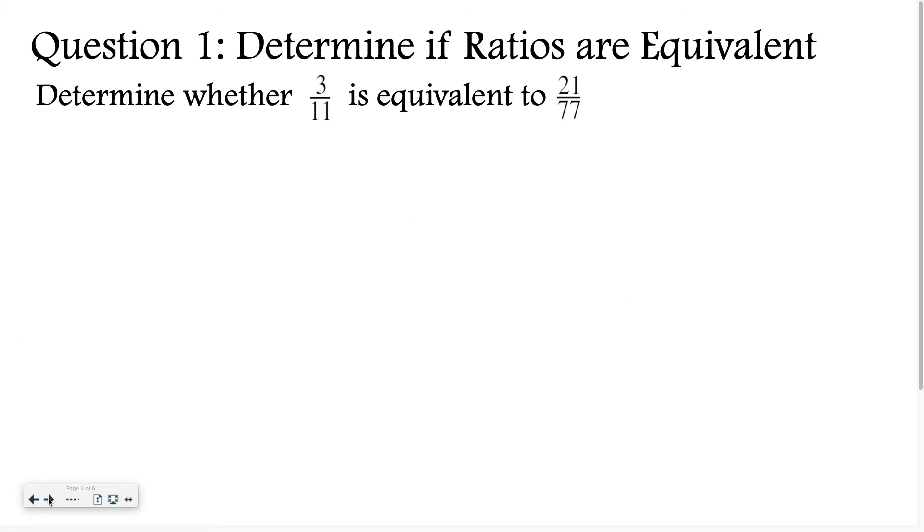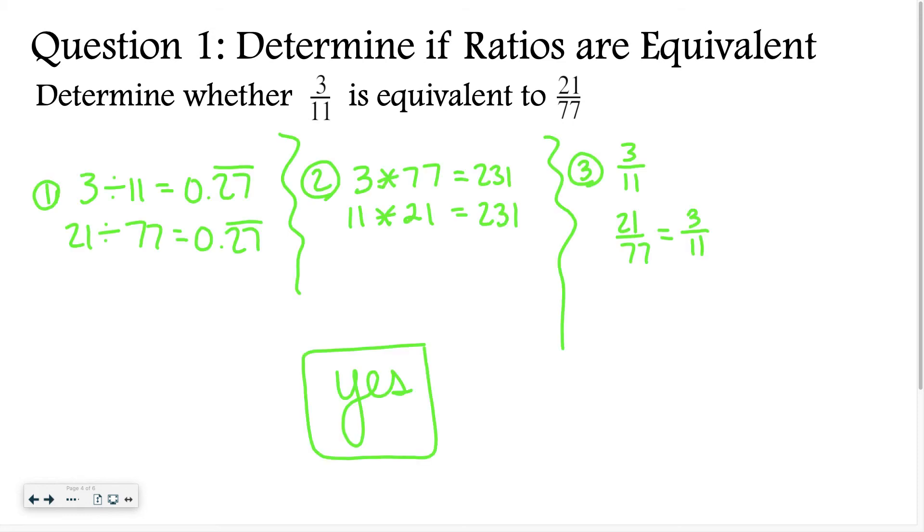All right, this time, I want you to determine whether 3 elevenths is equivalent to 21 seventy-sevenths. Good luck. All right, for this problem, hopefully you got yes as an answer that these ratios are equivalent. I just wrote out the work showing the three different methods that I just taught you on the last slide, so you can compare your work to mine to see if you're doing it correctly. If you have questions, please let me know.